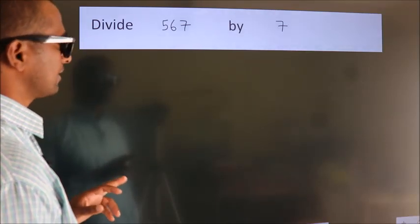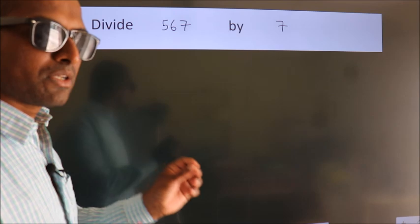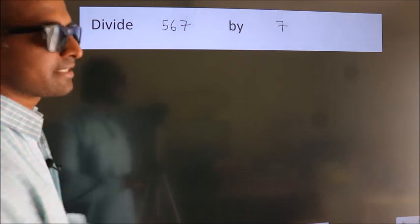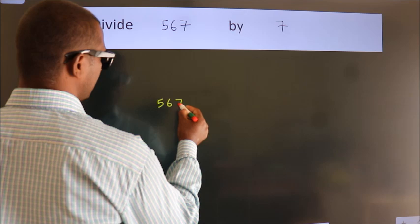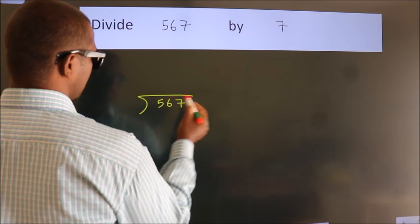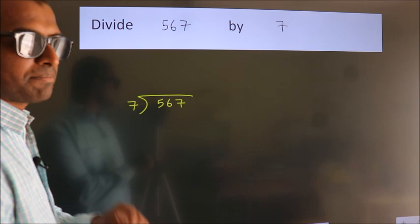Divide 567 by 7. To do this division, we should frame it in this way: 567 here, 7 here. This is your step 1.